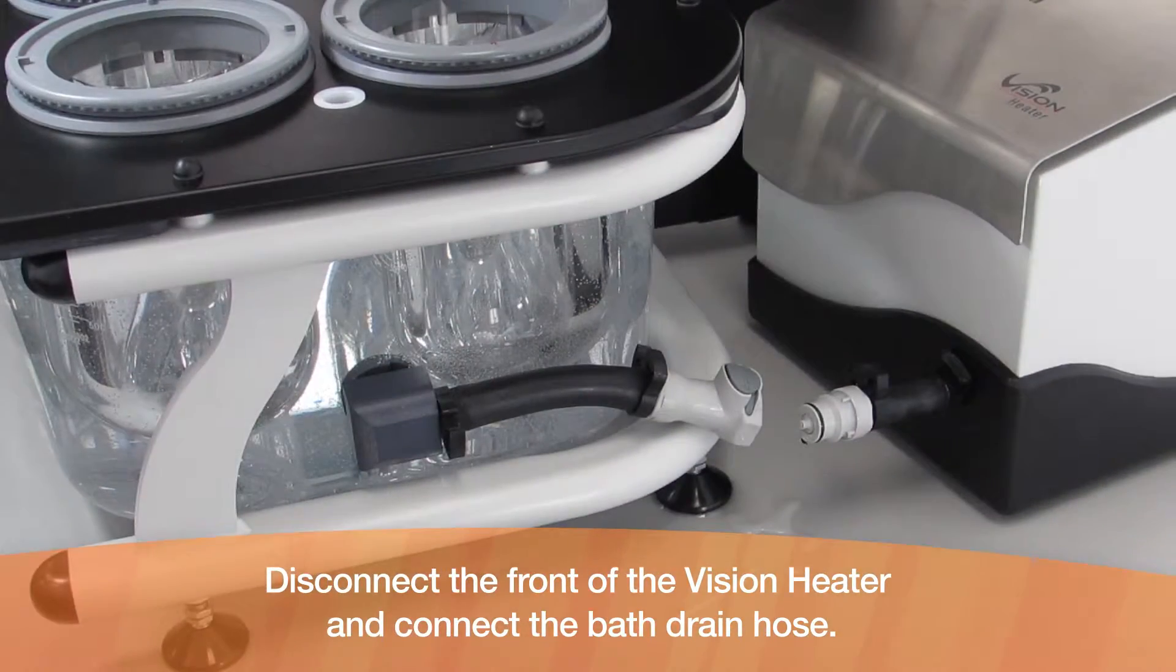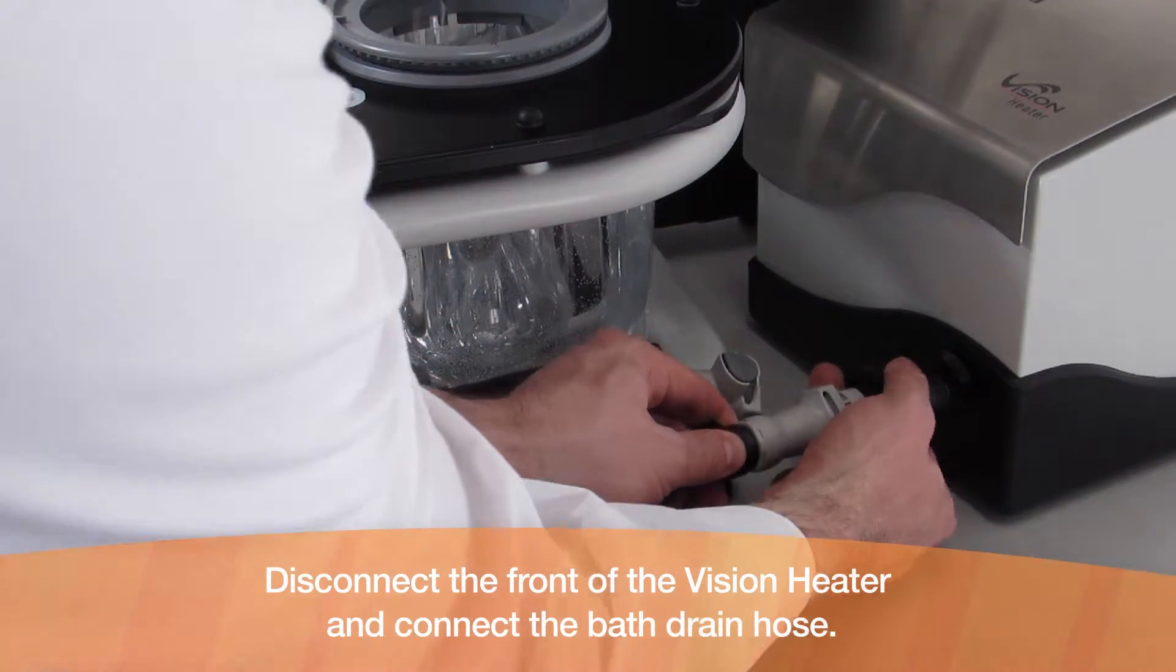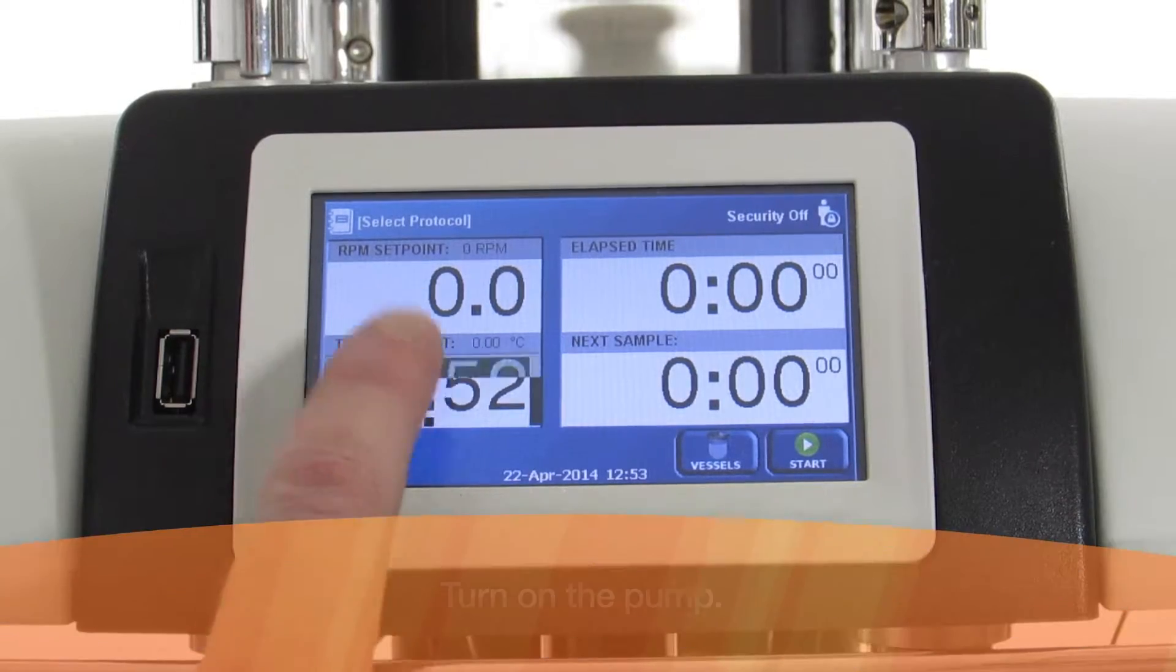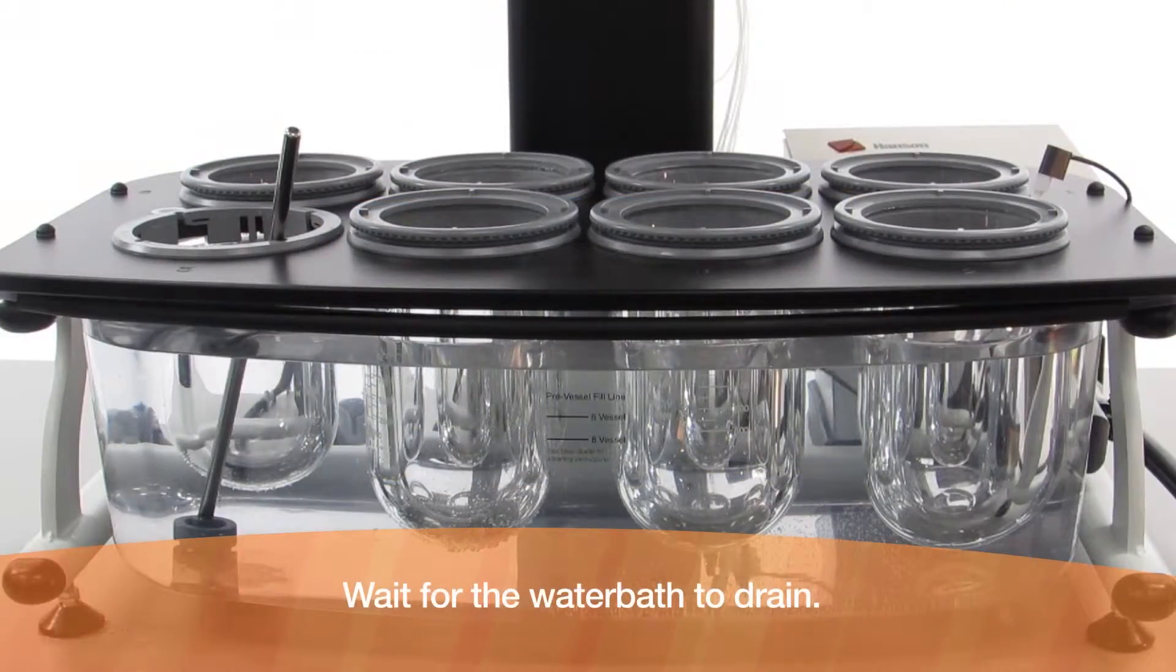Disconnect the front of the Vision heater and connect the bath drain hose. Turn on the pump. Wait for the water bath to drain.